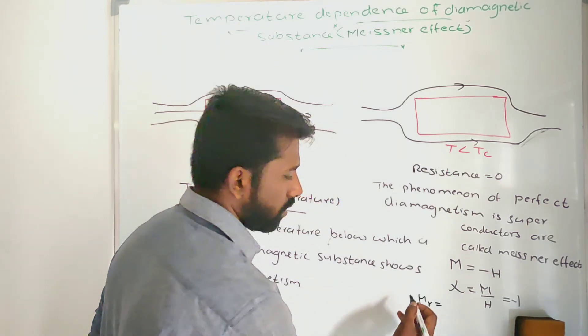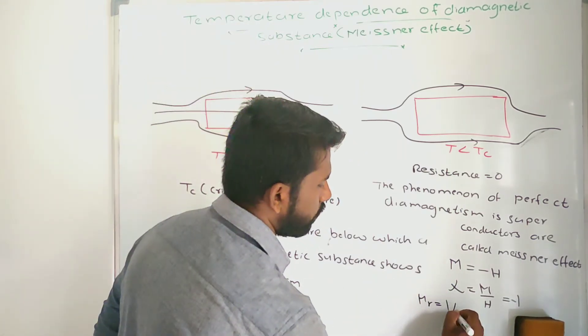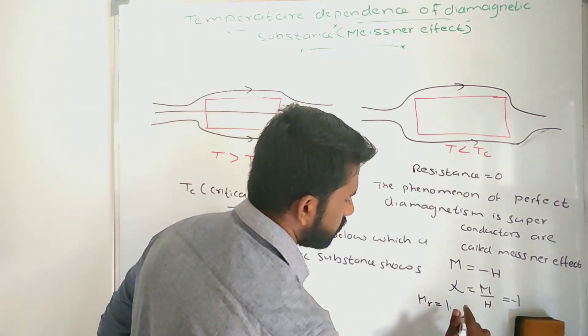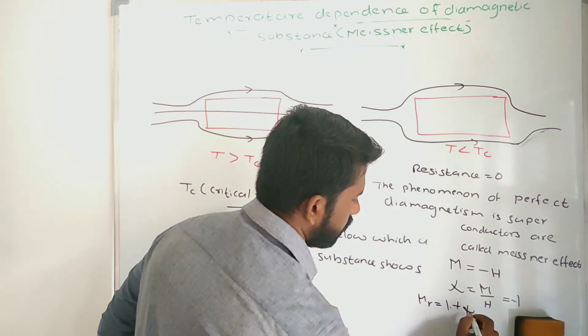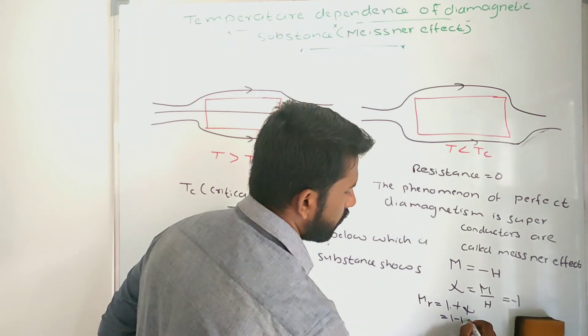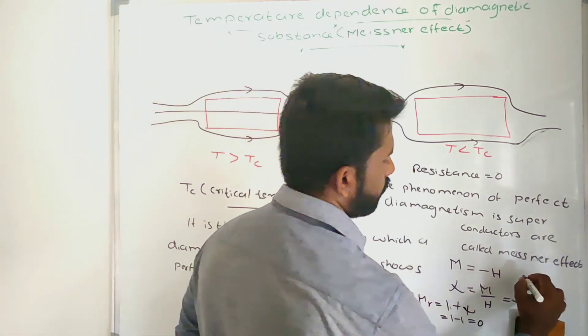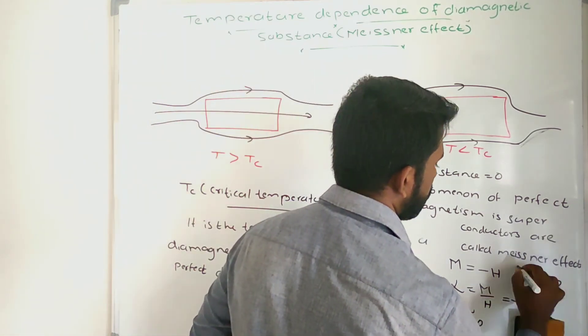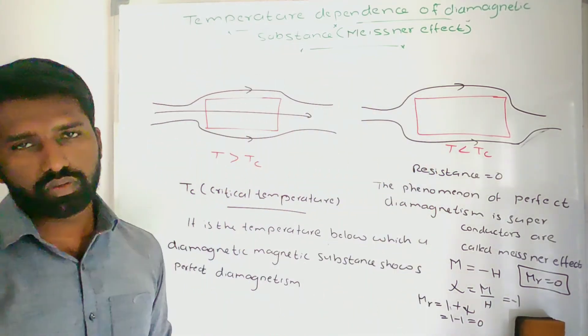The permeability, that is the relative permeability, is 1 plus susceptibility. So the susceptibility is minus 1, so 1 minus 1, you will get 0. So the relative permeability is 0.